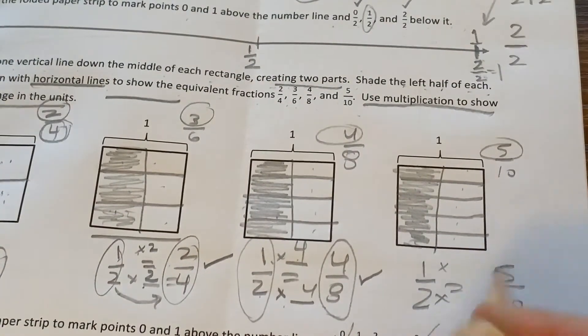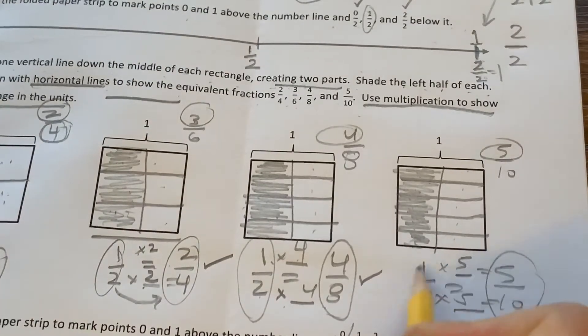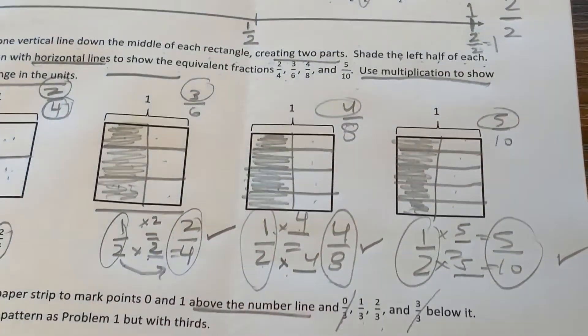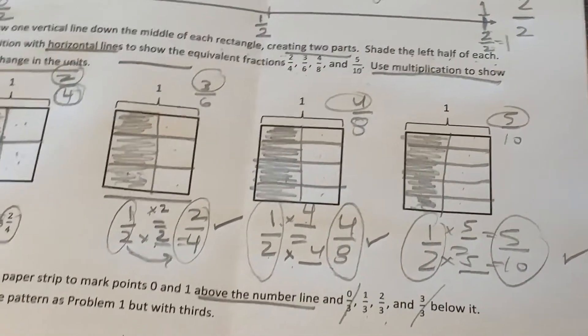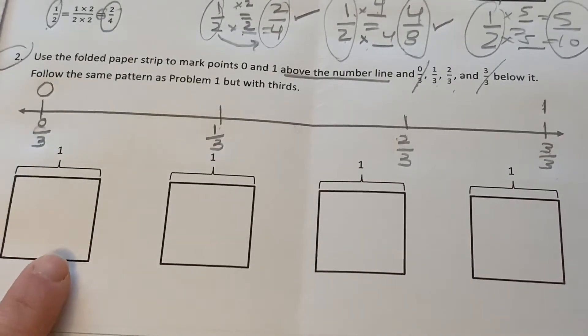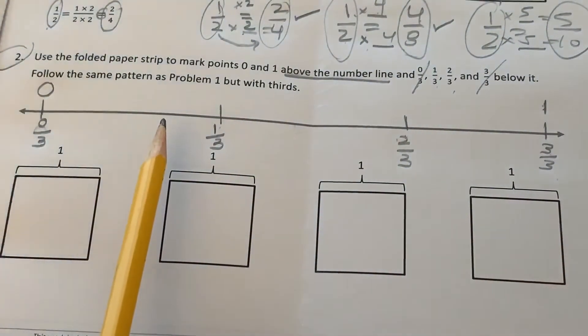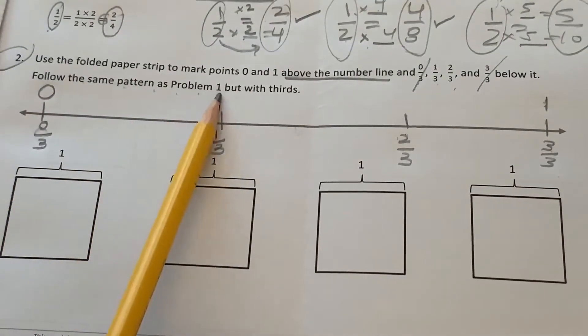Multiply. That's right. Five is the missing number. Another set of equivalent fractions. Okay, using what we just did, I want you to do it by yourself for this one. So, I'll help you by reading the directions. It says, follow the same pattern as problem one but with thirds.